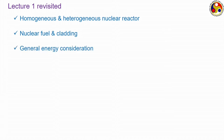We then covered general energy considerations. While generally more than 200 MeV of energy is produced for every fission reaction, only about 75 to 80 percent of that can be transferred to the coolant; the remainder goes primarily in the form of radiation.